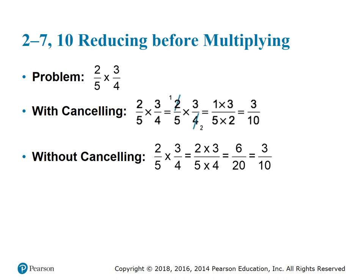When multiplying, you can expedite your work by reducing before you multiply — this is called canceling. If a numerator can go into a denominator number evenly, then canceling is possible. This saves time at the end because you won't have to spend as much time reducing your answer. You can reduce at the end instead — both approaches work.